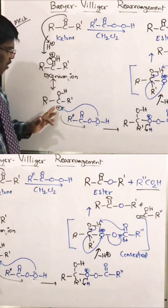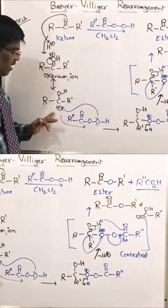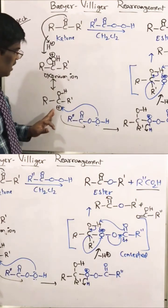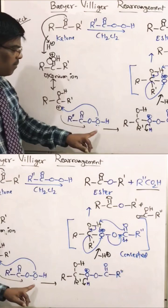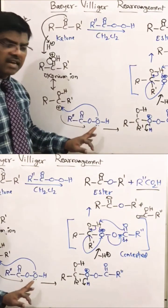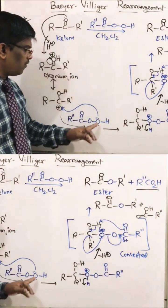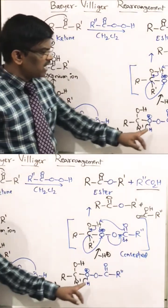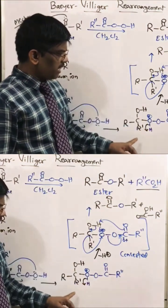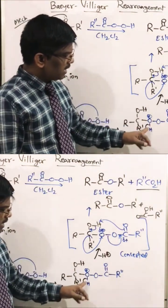This carbocation will be attacked by a nucleophilic reagent like the peracid oxygen nucleophile to give this intermediate.